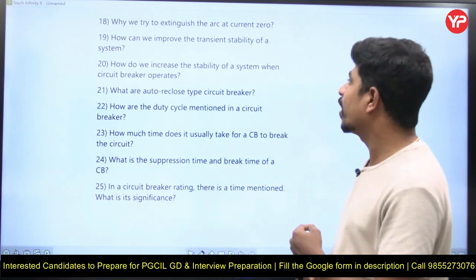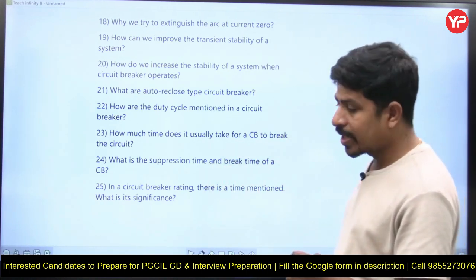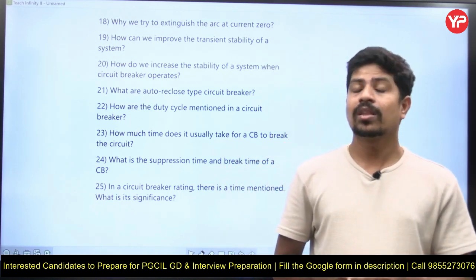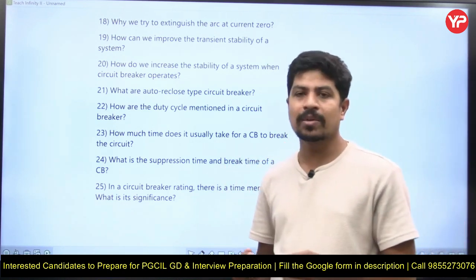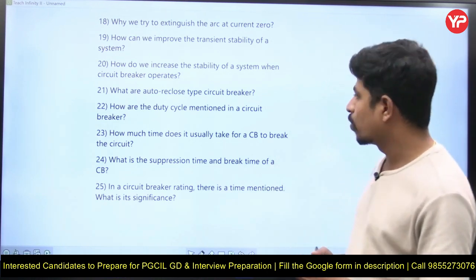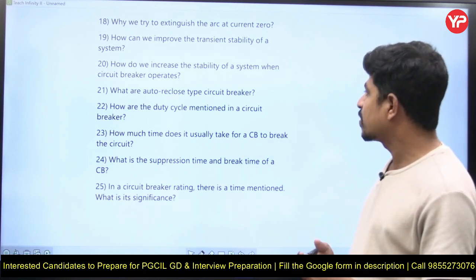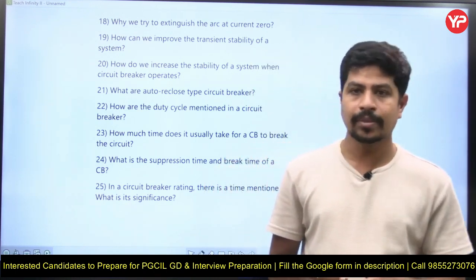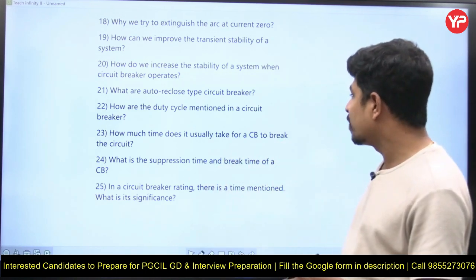How do we increase the stability of the power system? If you use a fast-acting circuit breaker, stability will obviously improve — the operation time of the circuit breaker must be less. What are auto-reclose type circuit breakers? Auto-reclose circuit breakers are breakers where the breaker closes automatically.